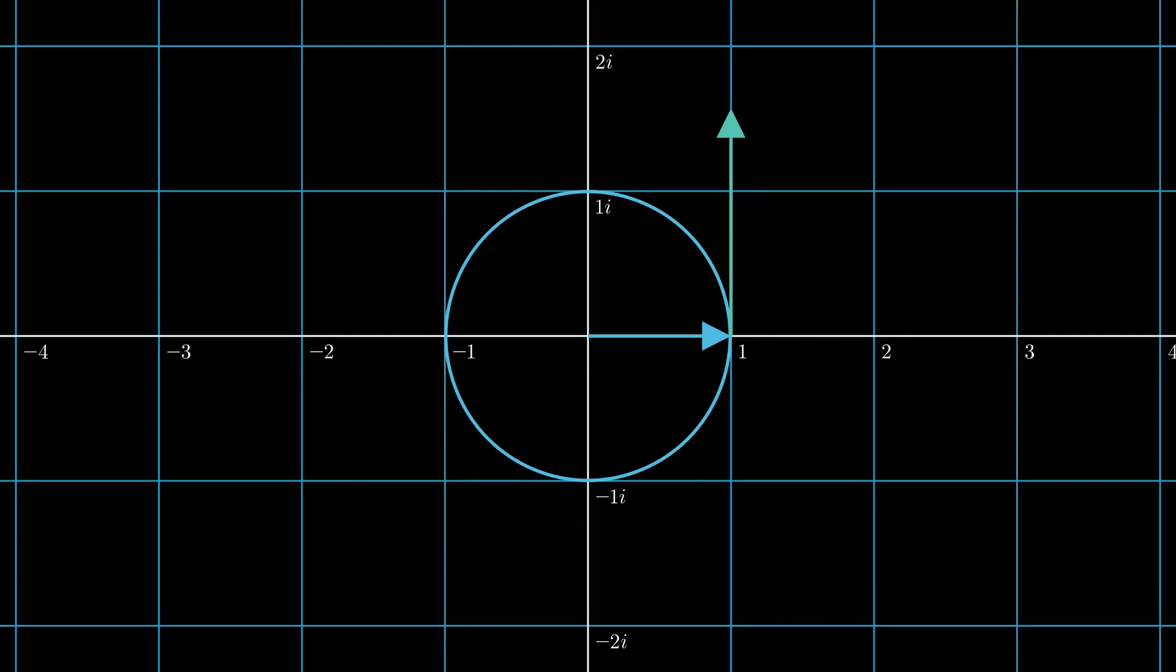Then we just wrap it onto the circle. Where the tip of the dragger ends up on the circle is the tip of the new state vector. That's it! Simple, isn't it?